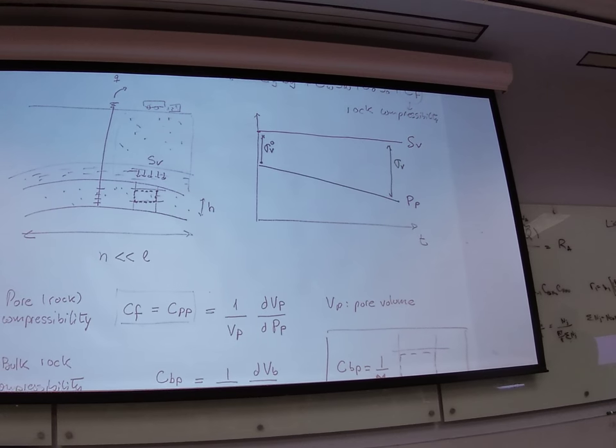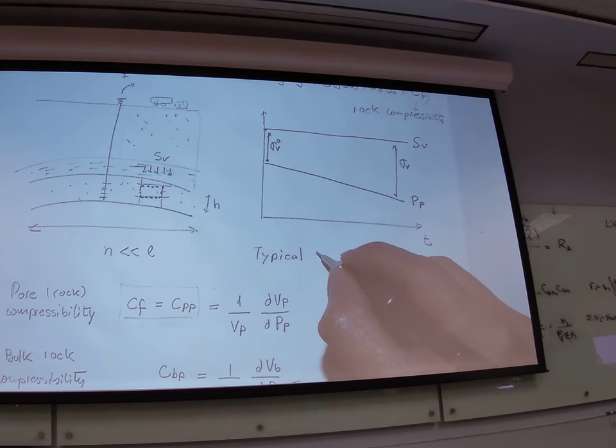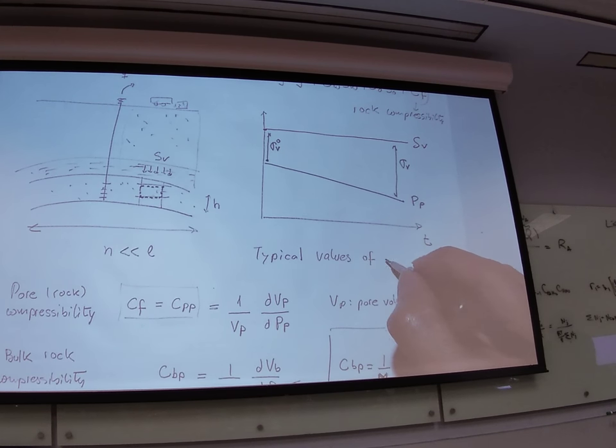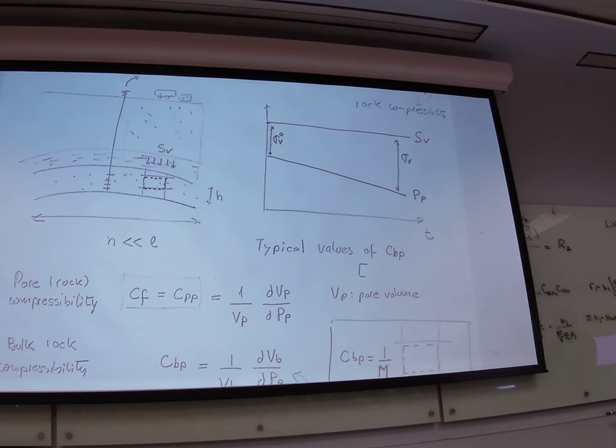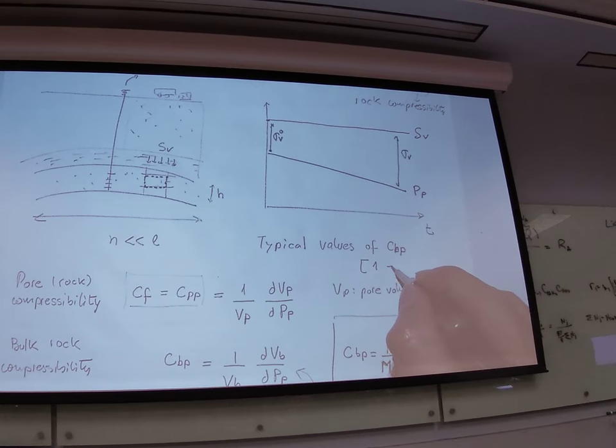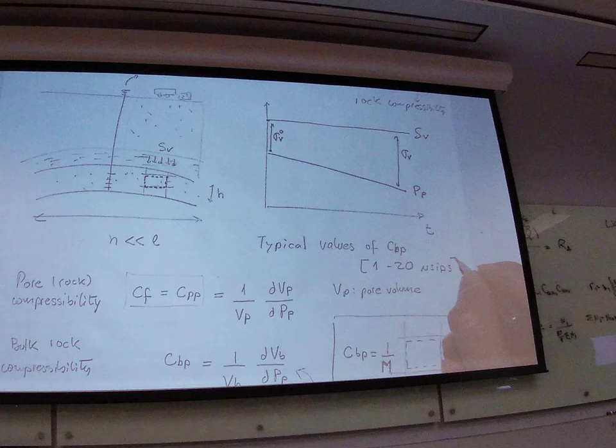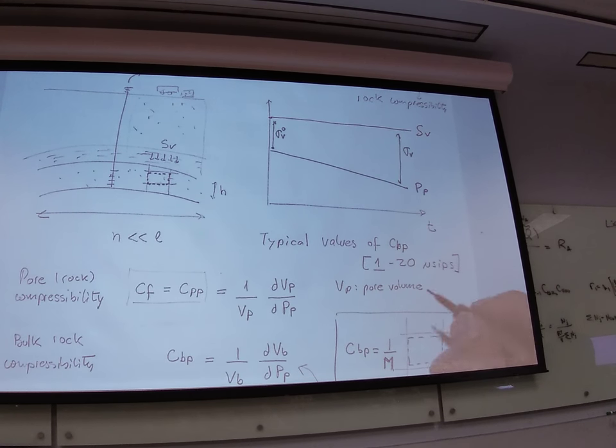Something very important. I want to see that. What are typical values of compressibility? Just make sure that you don't get the wrong value. They go more or less from I would say 1, sometimes less than 1 if you have a very tight rock, to about 20 or sometimes more micro-sips. So, something very stiff and not compressible is around 1. Something very compressible is around 20.